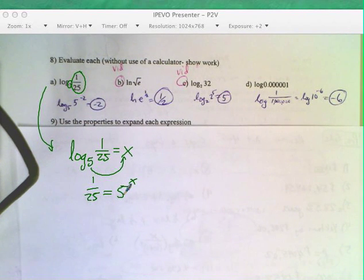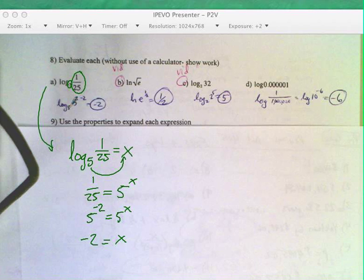And say 5 to the x equals 1 over 25. Then you say, well, I know 5 squared is 25, so if it made it go to the bottom, all that would do is say negative 2 makes it go to the denominator, and x must be negative 2. That's a lot more work than that sometimes you need. Sometimes you're going to see, okay, this is 5 to the negative 2. Log base 5 of 5 to the negative 2 is negative 2.